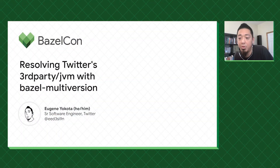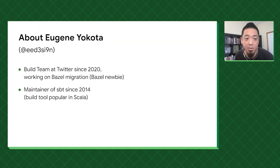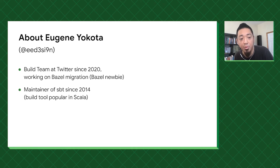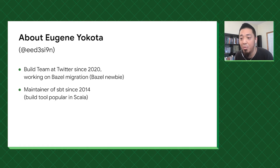Today, I'd like to talk about third-party dependency resolution in JVM and the solution that we're developing at Twitter called Bazel Multiversion. I joined the build team at Twitter last year, so I'm relatively a newbie in Bazel. However, I've been maintaining a build tool called SBT that's popular in the Scala ecosystem. In a way, I'm more familiar with messing with JAR files from Maven Central in the binary ecosystem, especially in Scala.